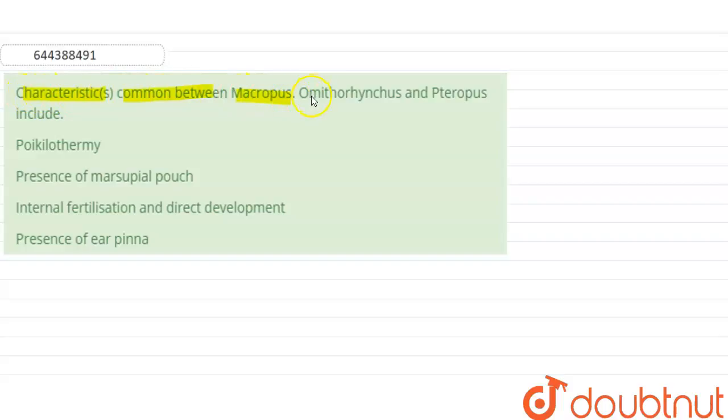between Macropus, Ornithorhinus and Pteropus include. So let's see what Macropus means - basically it is the scientific name of kangaroo. Ornithorhinus is the scientific name of platypus.